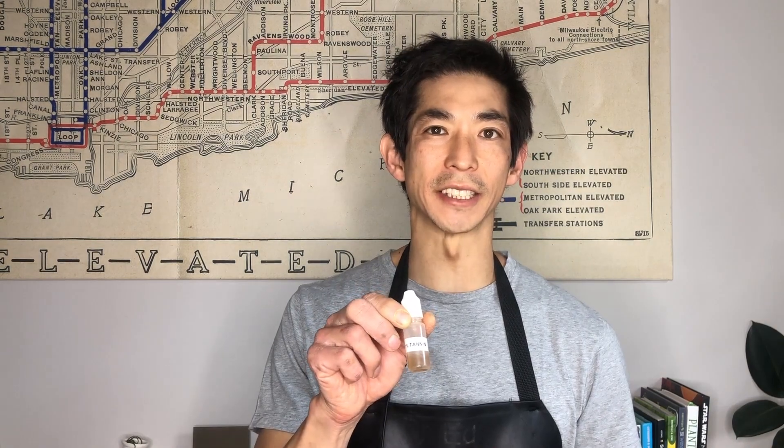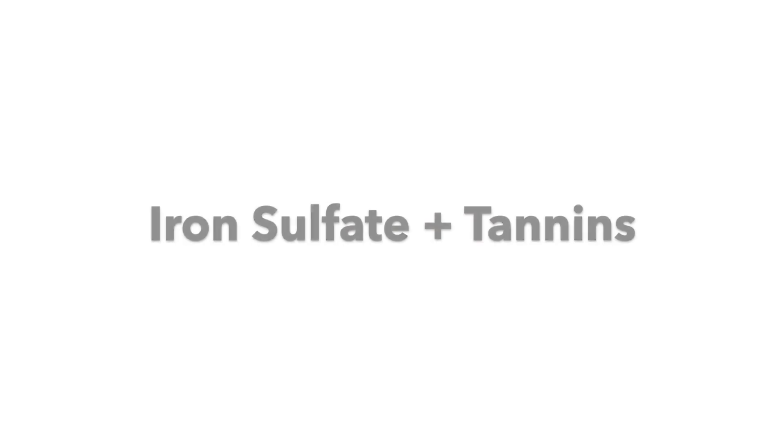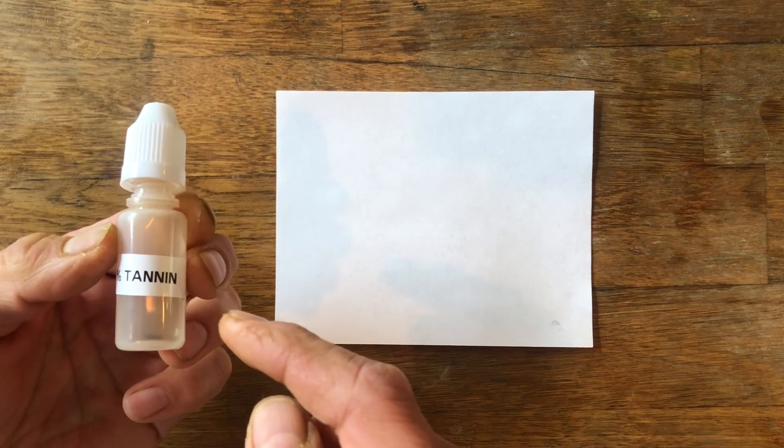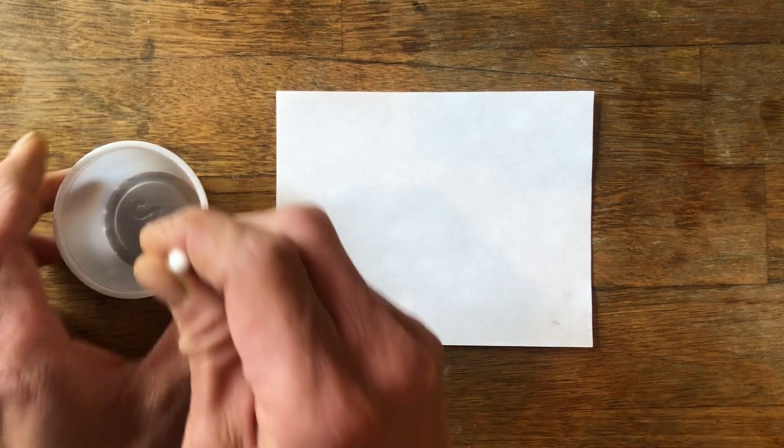We will be making invisible ink from iron sulfate, which you could get from supplement tablets, and gallotanic acid. You could also use tannins derived from green tea and black tea. Write a message with 1% gallotanic acid solution.